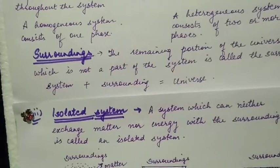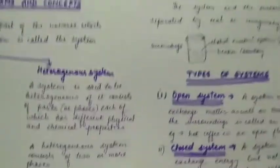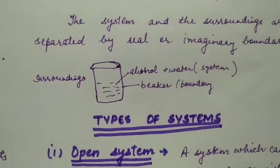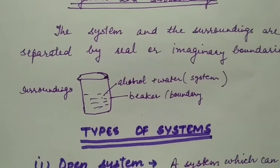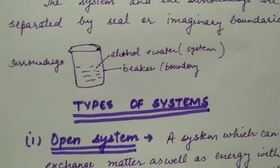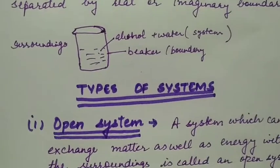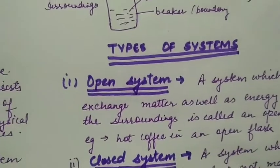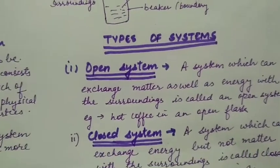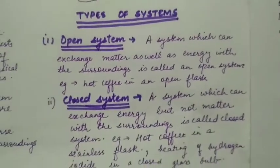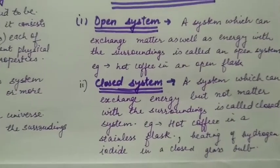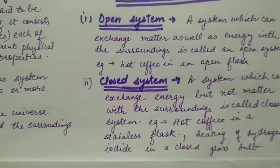System and surrounding together make the universe. For example, if we have alcohol and water in a beaker, alcohol plus water is the system, the rest is surroundings, and the beaker separates the system from surroundings - it is the boundary. Types of systems: we study three types of systems - open system, closed system, and isolated system.